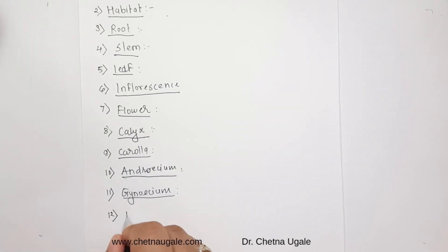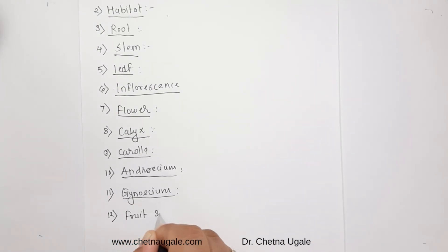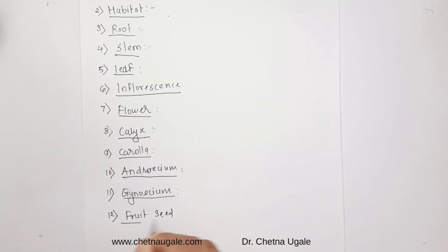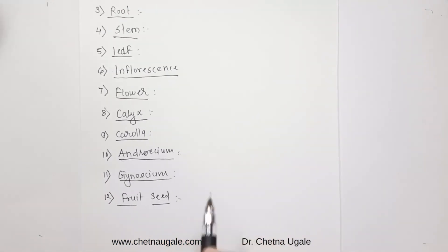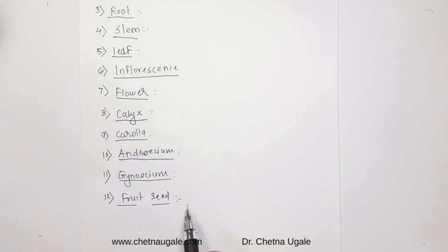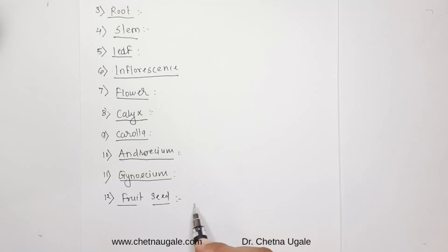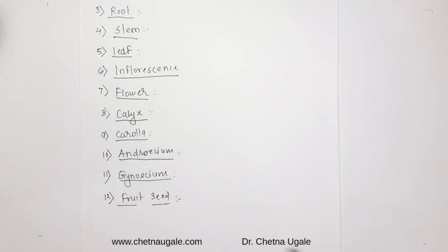The last terminology covers fruit and seed. We mention the type of fruit — whether it is a capsule, drupe, or any other fleshy or dry fruit. For the seed, we mention whether it has an endospermic seed or a non-endospermic seed.